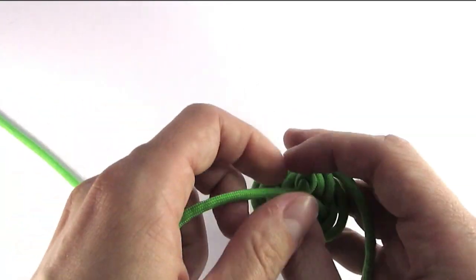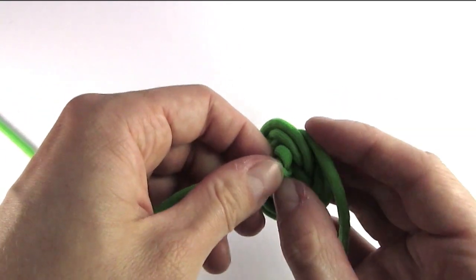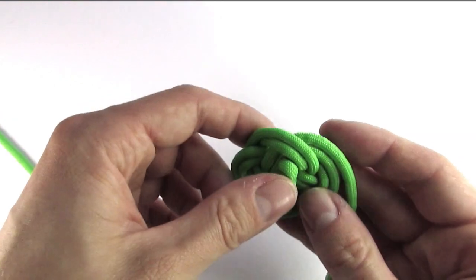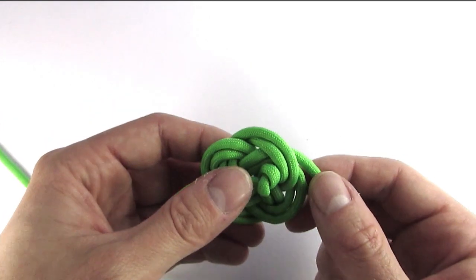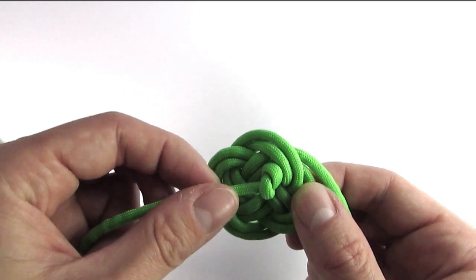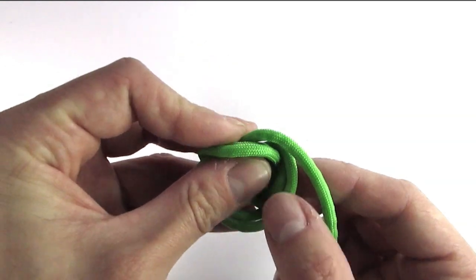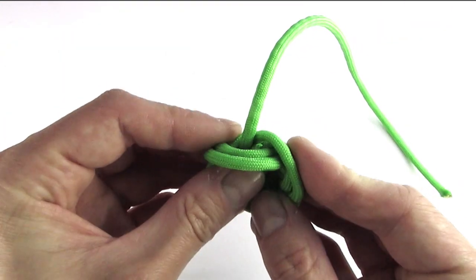With this done, all that's left is to form the knot around this core, which is done by folding it over and removing the slack from it.